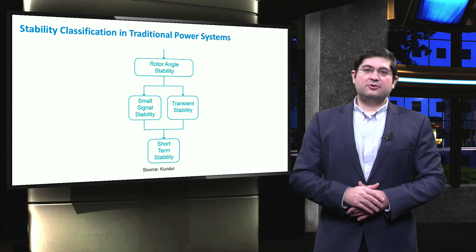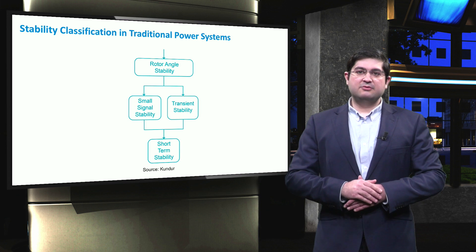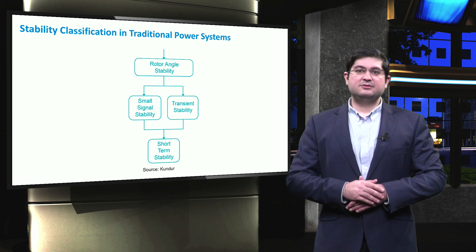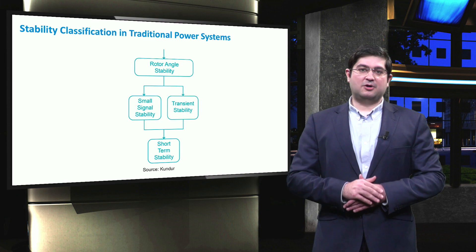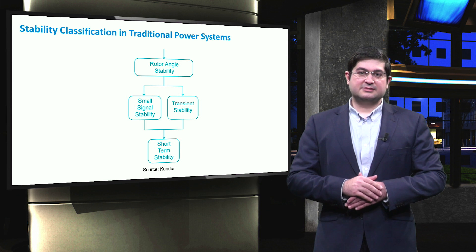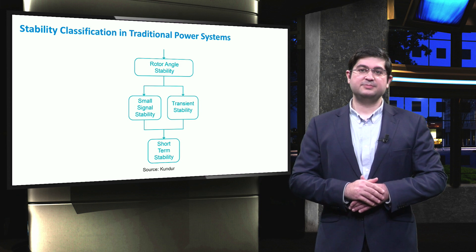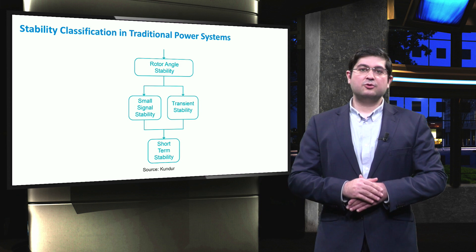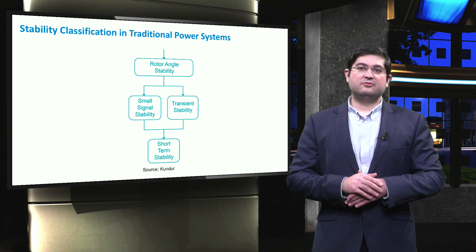Before we start to describe the classification of stability in microgrids, we first have to learn and introduce the stability classification in traditional power systems. In general, the stability of traditional systems can be divided into three general groups, namely rotor angle stability, frequency stability, and voltage stability.